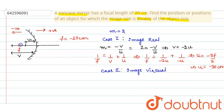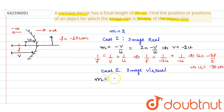Taking Case 2, where the image formed is virtual: the magnification formula gives m = v/u, so 2 = v/u, which means the image distance v = 2u, where u is the object distance.